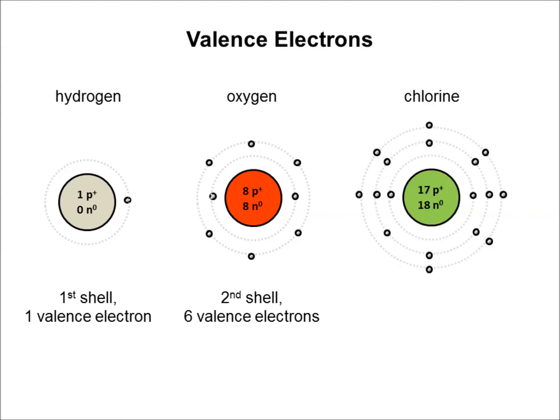Chlorine has a total of 17 electrons. Seven of them are in the third shell, which is the valence shell as the outermost. So they have seven valence electrons.